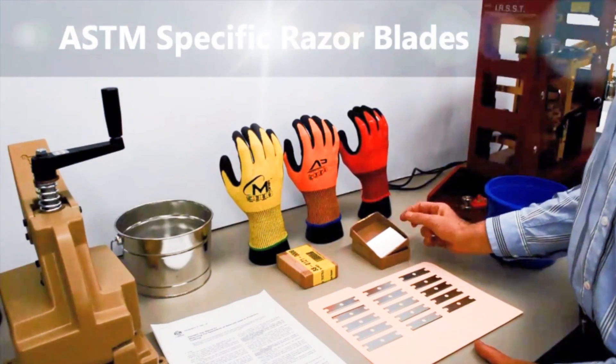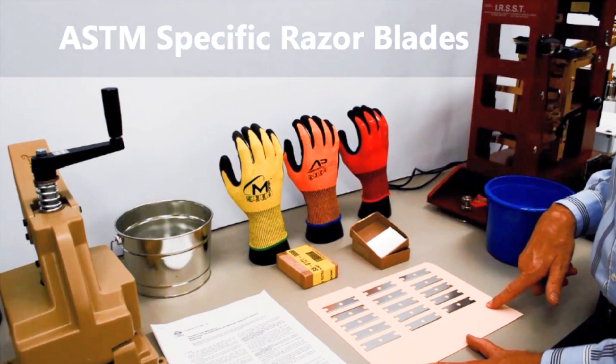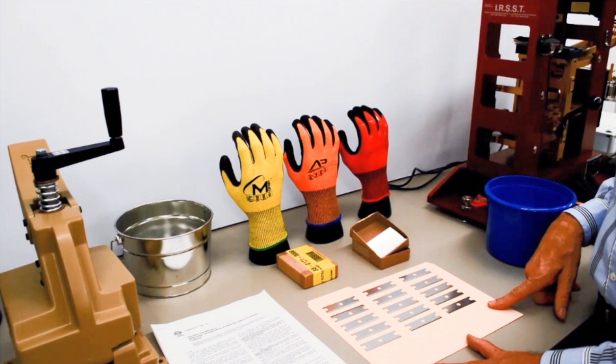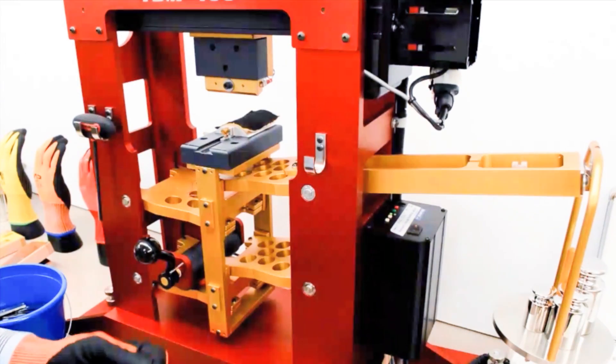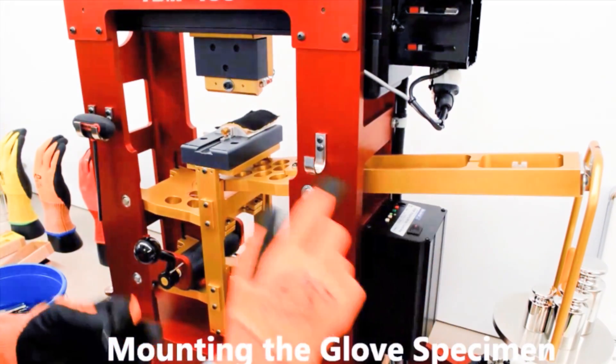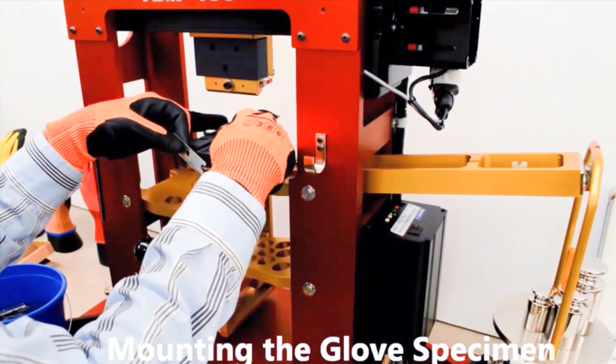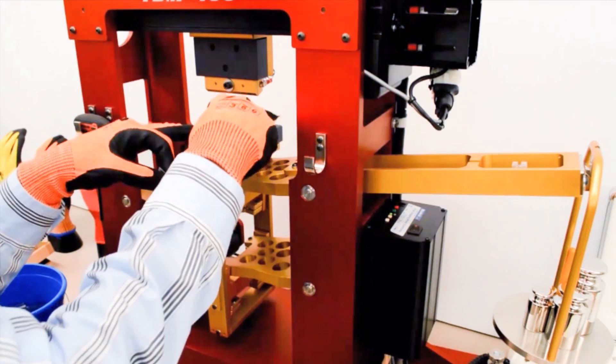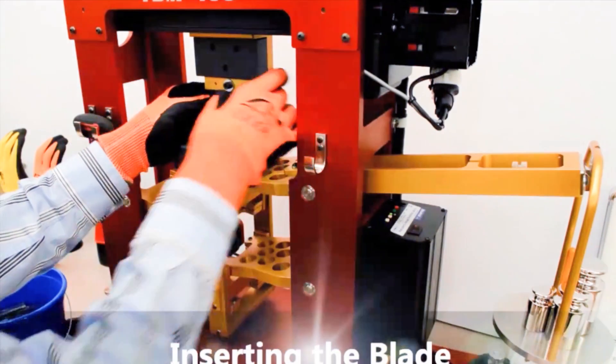For the ASTM method, a specific style of razor blade is used, and it takes 15 different razor blades to perform one ASTM cut resistance testing. On the TDM100, the first step that we take is we mount the test material. This is the yellow glove, and it's mounted onto the mandrel with the copper strip on it, and then we place the razor blade above it in the holder.